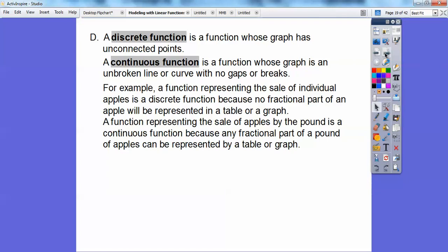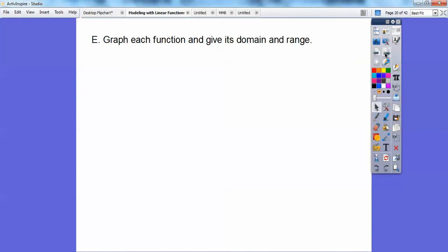For example, a function representing the sale of individual apples is discrete because you're not going to sell part of an apple. However, a function representing the sale of apples by the pound is a continuous function because any fractional part of a pound is represented in the graph. So if it's connected with a line or curve, it's continuous. Otherwise, it's called a discrete function.